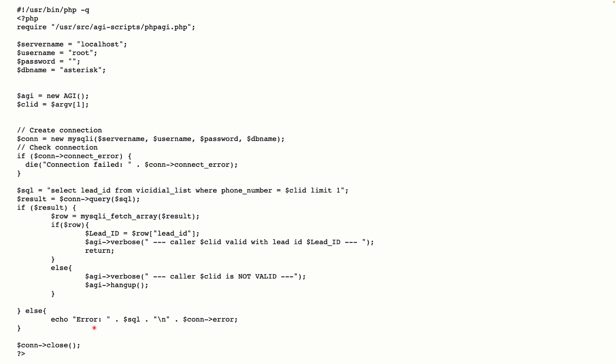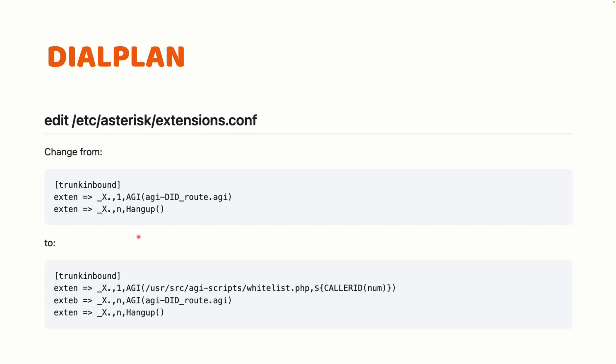To fully understand this script you need to know a little about databases and PHP, but the concept is very simple and you can get the idea of how AGI scripts work. Now that we have our script ready, let's see how we can route calls to an AGI script. It's a very simple process — you use the application name AGI. When a call comes into a context in VICIdial, the default context name is 'trunk-inbound'. You call the AGI application and give it the path to your script.